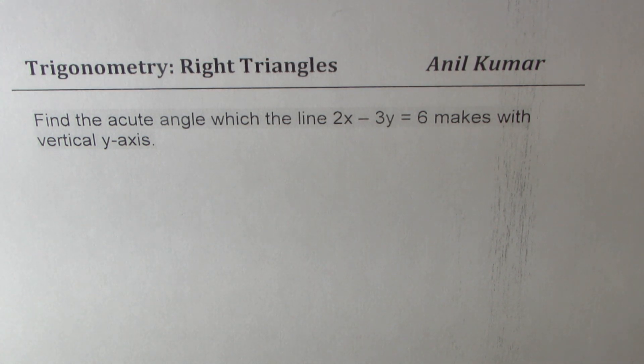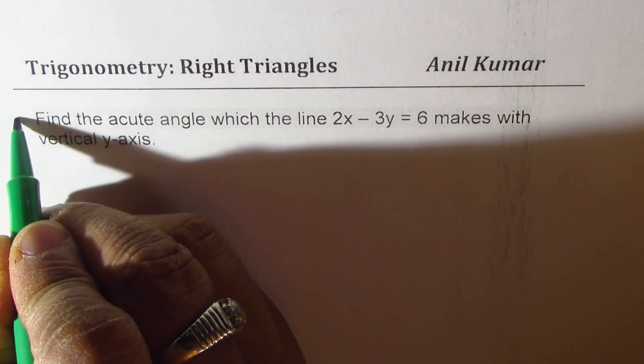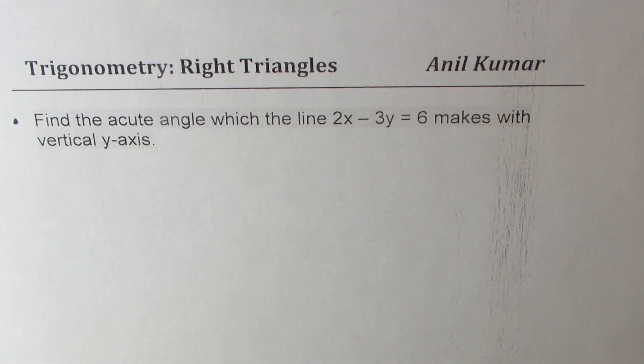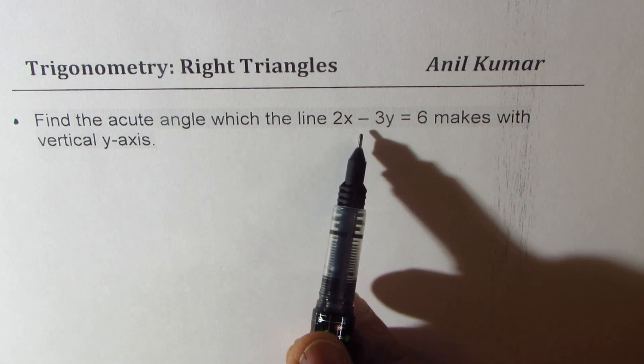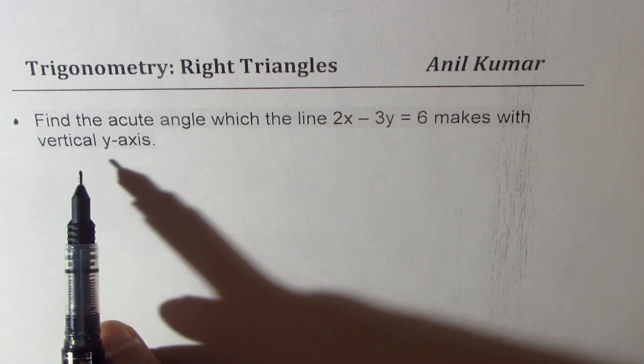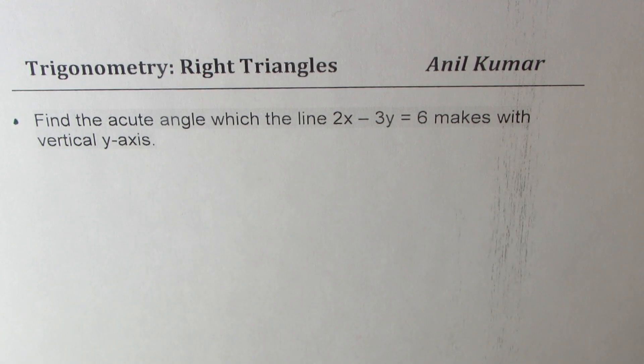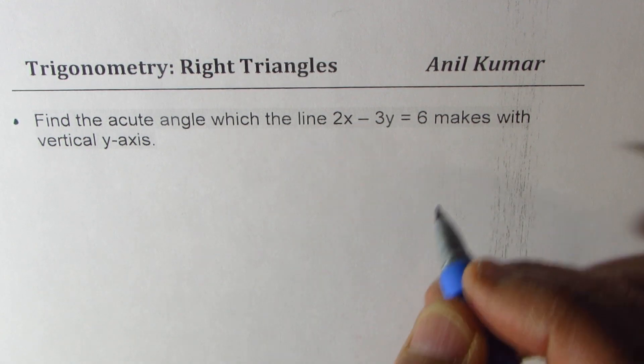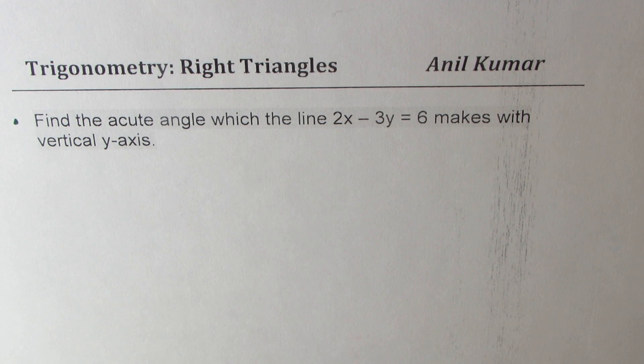We call it slope angle and here is a variation to the same question. Now the question is find the acute angle which the line 2x minus 3y equals to 6 makes with vertical y-axis. You can always pause the video, answer the question and then look into my suggestions.